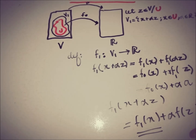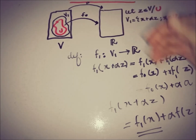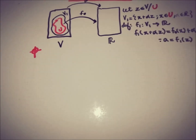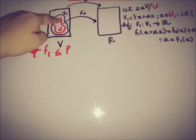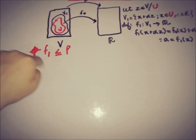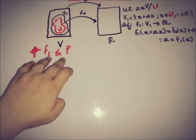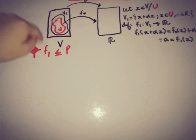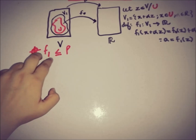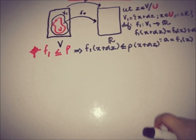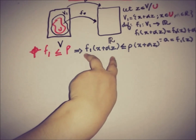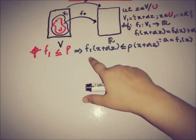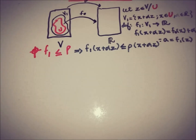We now look forward and check whether f₁ also satisfies the extension property with respect to p defined on V. Our target is that f₁ defined on V₁ satisfies f₁(x) ≤ p(x). If this is true, then f₀ has been extended to V₁ in the form of f₁. We can write this target as: f₁(x + αz) ≤ p(x + αz).